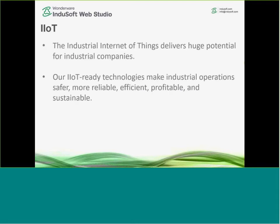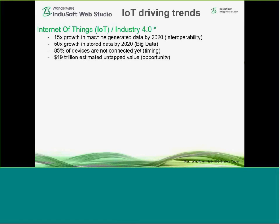The Industrial Internet of Things delivers huge potential for industrial companies — enabling access to production data, status, and alarms over the Internet. Our IoT technologies make industrial operations safer, more reliable, efficient, profitable, and sustainable. The prospects for IoT, based on data from Wind River Helix 360, show a potential 50-fold growth in stored data by 2020. Right now, 85% of devices are not yet connected, but eventually they may be, representing a $19 trillion estimated opportunity.